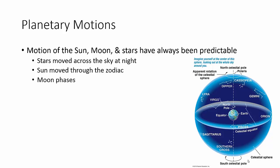Planetary motions. Basically, almost everything has been predictable. The sun rises, the sun sets, the moon rises, the moon sets. The stars, you can even track those around the sky throughout the year.